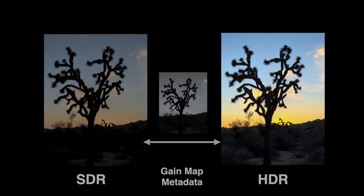By adding gain map metadata to our scene-referred SDR photographs, we created a simple way to extend the SDR data into the new display's HDR headroom. This metadata preserves the spatial locations of bright areas of the scene by using an underexposed bracket as the basis for the gain map, giving better control and quality compared to just stretching the SDR data to fit the range. We've been using these gain maps for several years on iPhone.